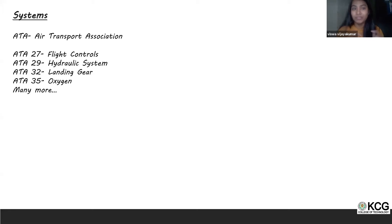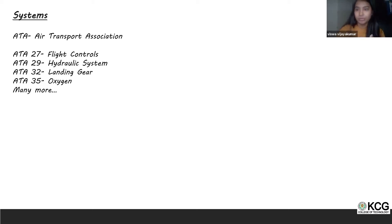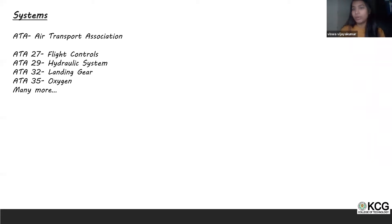When I initially started as an intern, I wasn't aware of ATA chapters, but I feel all juniors need to know this. ATA chapters also contain rules on how systems operate and how they should be designed. For example: flight controls is ATA 27, hydraulic system is ATA 29, landing gear is ATA 32, and oxygen is ATA 35. These are fixed standards available on open source.